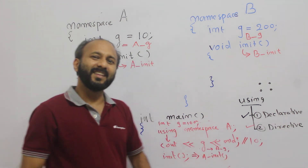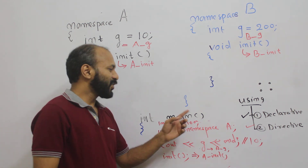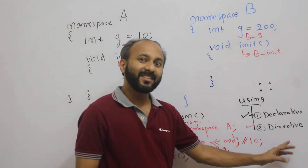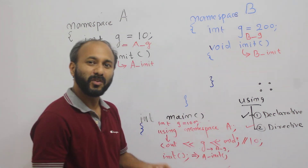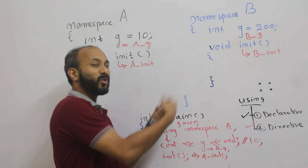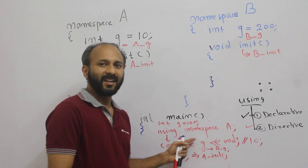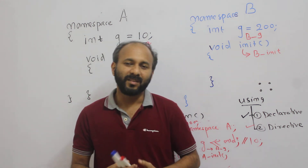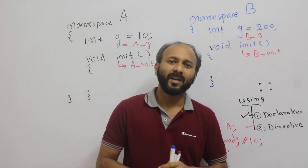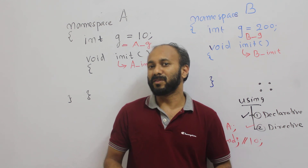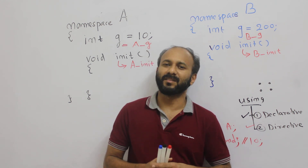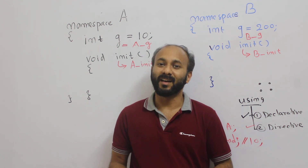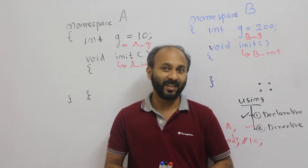The declarative method is similar to declaring a variable inside a particular scope. The directive method is just directing the compiler: if you want to access something, go to that namespace and get the element. Hope you have understood the concept. This session is 11.2. I will be continuing the namespace concept in following sessions. If you have any questions or comments, please write to me. Thank you for watching this channel.